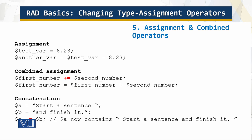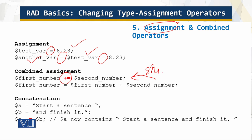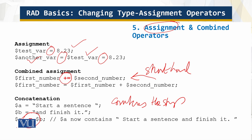How do we combine them? We can combine assignment operators together. For example, I set the value using the assignment operator to 8.23, and simultaneously this value is assigned to multiple variables. These can be combined into a shorthand form. Similarly, this is the concatenation operator which combines strings and also helps us create a shorthand.